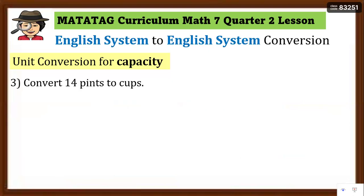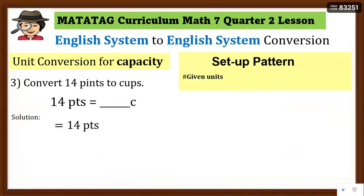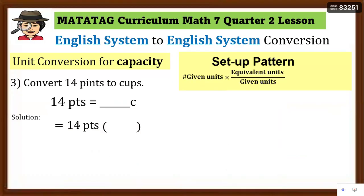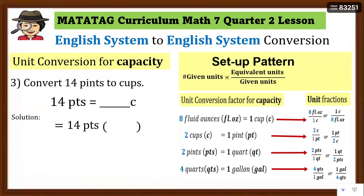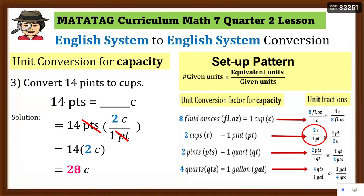Number 3: Convert 14 pints to cups. Write the equation and set up the pattern. The given unit is pints going to cups, so we need pints in the denominator and cups in the numerator — that is 2 cups over 1 pint. Cancel the pints (plural with S), then multiply: 2 cups times 14 equals 28 cups. So there are 28 cups in 14 pints.